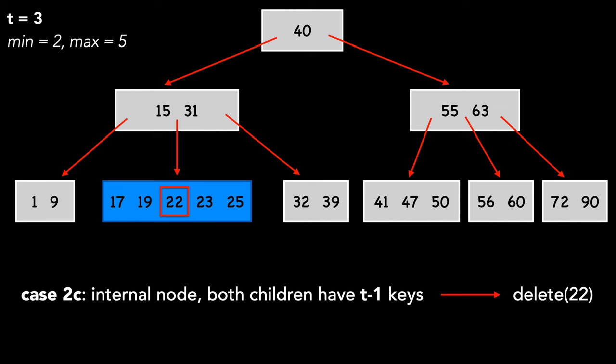Z goes away, and we have a new node that contains 22, and has 2 times T minus 1 keys. We're now safe to delete 22, as this is simply case 1.